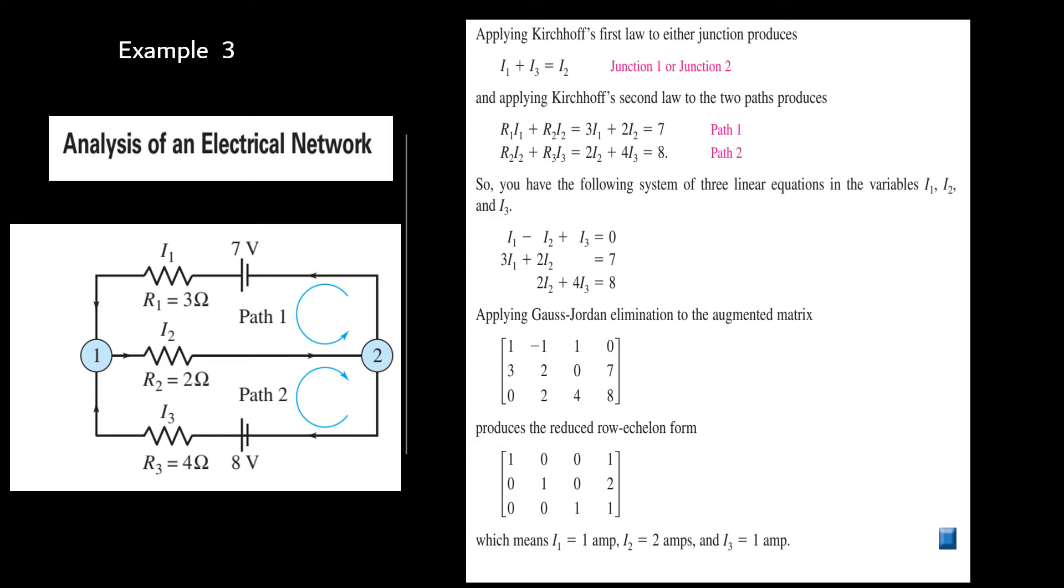In this example, let us talk about the electrical network. We have two junctions, junction one and junction two. We are applying the law of Kirchhoff's. Here I1 plus I3 must be equal to I2 for junction one or junction two. And if you are taking two different paths, you take all those R1 times I1 plus R2 using the second law. You get R1I1 plus R2I2 is 3I1 plus 2I2, which is 7. The same way you get the next one. So you have three different equations in terms of I1, I2, I3. You can use the reduced row echelon form of it and find the value for I1, I2, I3.